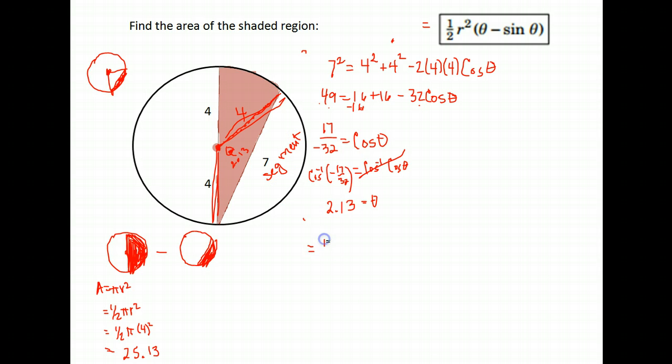All right, so the area of a segment is one half times radius squared times theta minus the sine of theta. That's one half times my radius is 4, squared, times my theta of 2.13 minus the sine of 2.13. 4 squared is 16 divided by 2 gives me 8, and 2.13 minus the sine of 2.13 is about 1.28. Again, I just leave the full thing in my calculator and go times 8—you should get about 10.26.